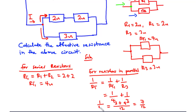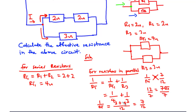So we have 1/RT = 7/12. Cross multiplying: 12 = 7RT. Dividing by 7, we get RT = 12/7 ohms, or approximately 1.71 ohms. This is how to find the equivalent resistance for the circuit.